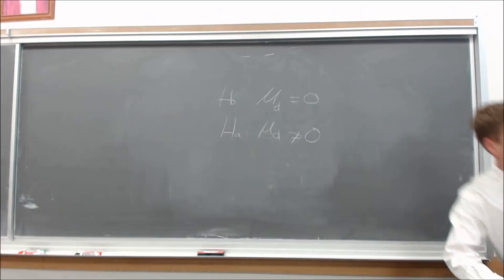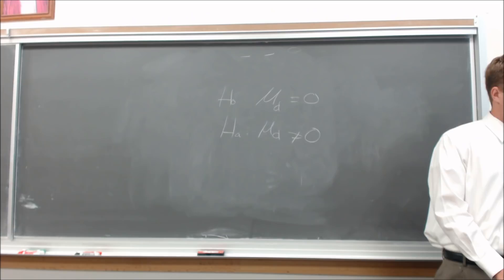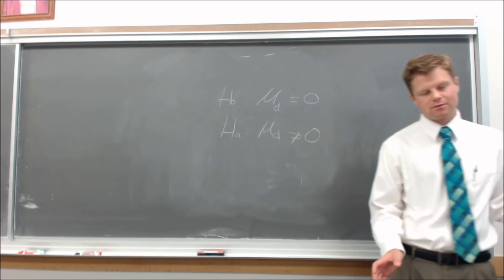Part E: State the degrees of freedom. The degrees of freedom are 8. It says it right there, and we also know it because there are nine pieces of data and eight degrees of freedom, because it's nine minus one.